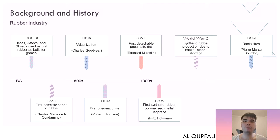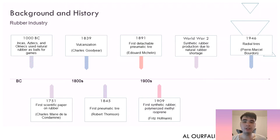In 1000 BC, the Incas, Aztecs, and Olmecs used natural rubber as balls for games. In 1751, the first scientific paper on rubber was written by Charles Marie de la Condamine. In 1839, the vulcanization method was discovered by Charles Goodyear. In 1845, the first pneumatic tire was made by Robert Thompson. In 1891, the first detachable pneumatic tire was made by Edouard Michelin. In 1909, the first synthetic rubber was polymerized by Fritz Hoffmann.